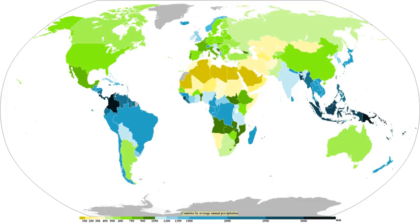Intensity and duration of rainfall are usually inversely related — high-intensity storms are likely to be of short duration and low-intensity storms can have a long duration. Raindrops associated with melting hail tend to be larger than other raindrops. The METAR code for rain is RA, while the coding for rain showers is SHRA.